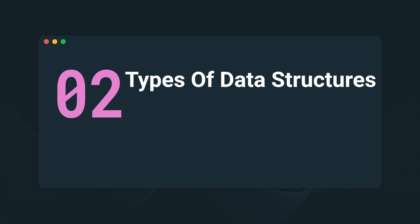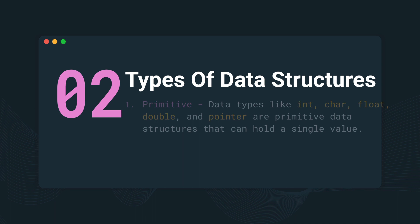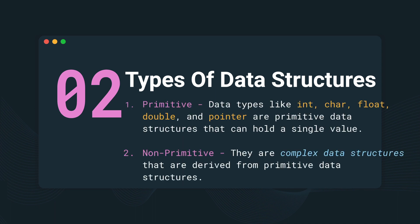Let's talk about the types of data structures. There are two main categories: primitive and non-primitive. Primitive data types include int, char, float, double, and pointer — these are primitive data structures that can hold a single value.